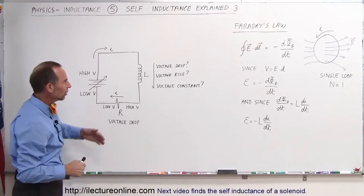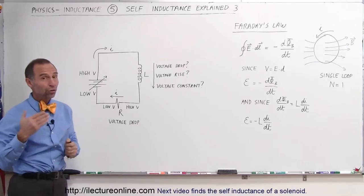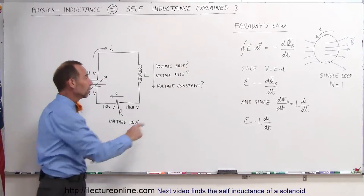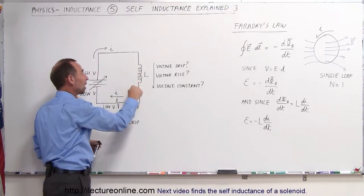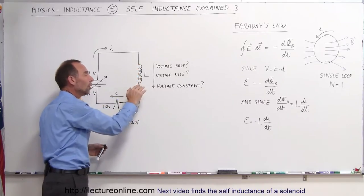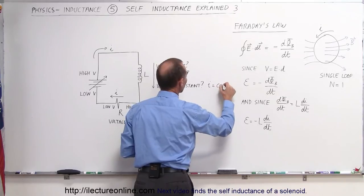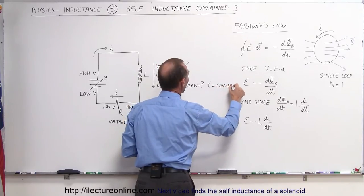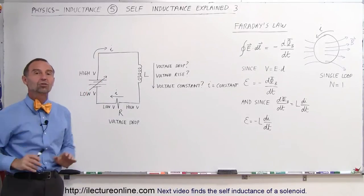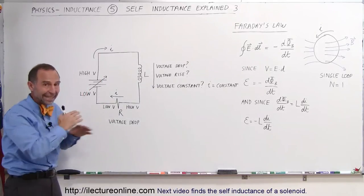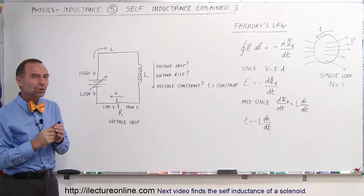But what about an inductor — does the voltage drop, rise, or stay the same? Well, all three can happen depending on the situation. The voltage will remain the same on both sides of the inductor — no voltage drop or rise — when the current remains constant. When I is constant, there is absolutely no voltage drop across the inductor, which means there's no opposition to the current. It's like the inductor isn't even there.